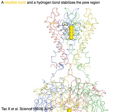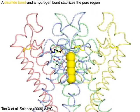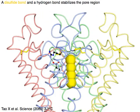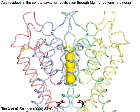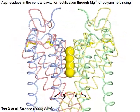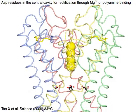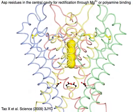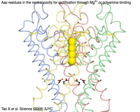A disulfide bond and a hydrogen bond stabilize the pore region. Aspartic acid residues in the central cavity are responsible for rectification. Potassium current is blocked by magnesium ion or polyamine binding to the cavity.